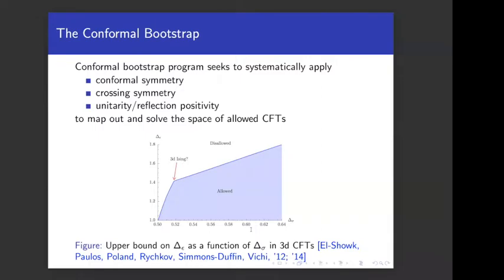Recently there has been a revival of the conformal bootstrap program, which seeks to systematically apply conformal symmetry along with crossing symmetry and unitarity constraints, or reflection positivity, to map out and solve the space of allowed CFTs. A famous example of success is the 3D Ising model, where numerical bootstrap attempts have led to the world's most precise determination of its critical exponents and OPE coefficients.